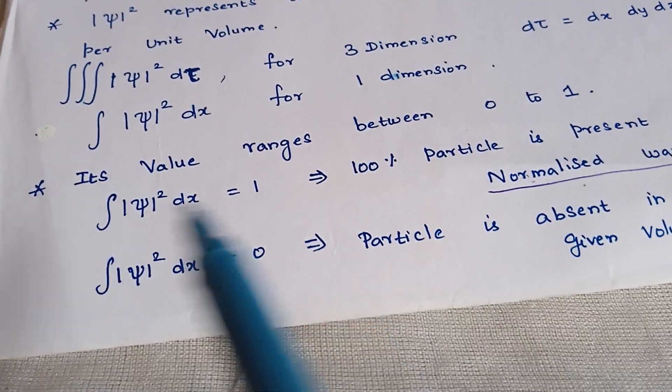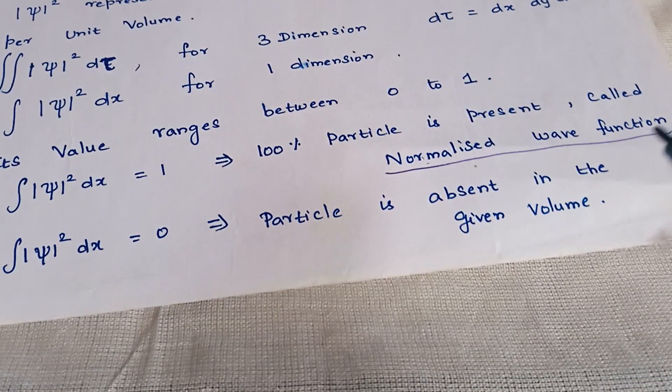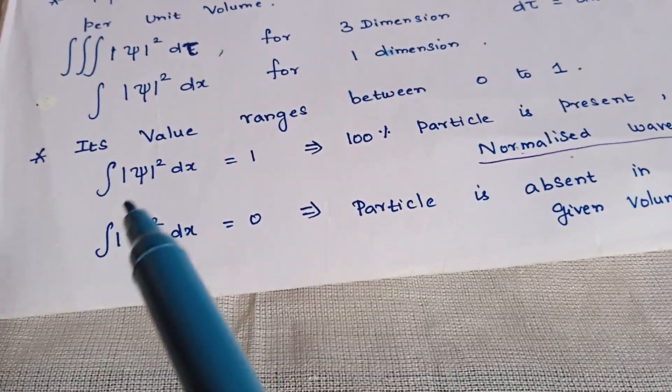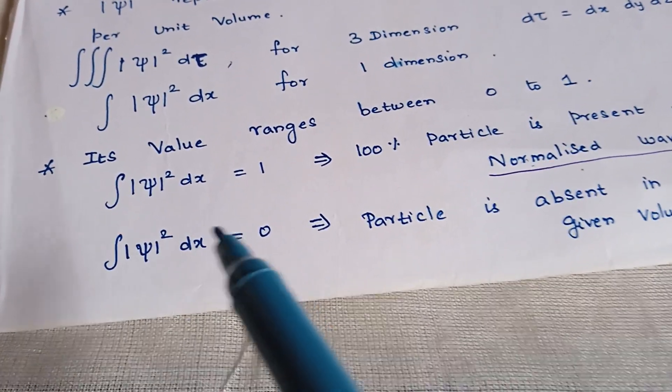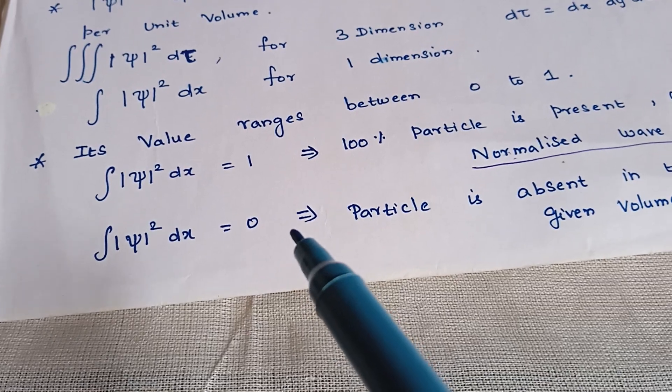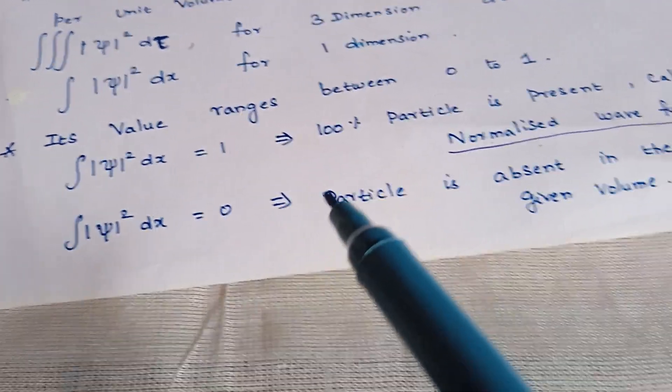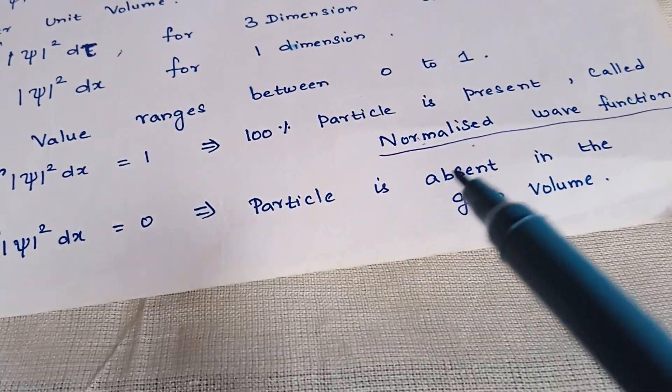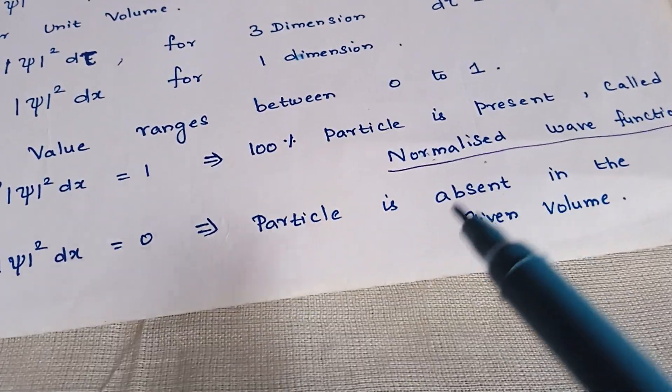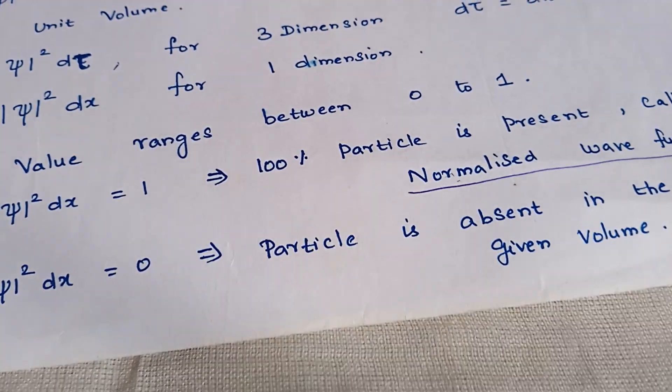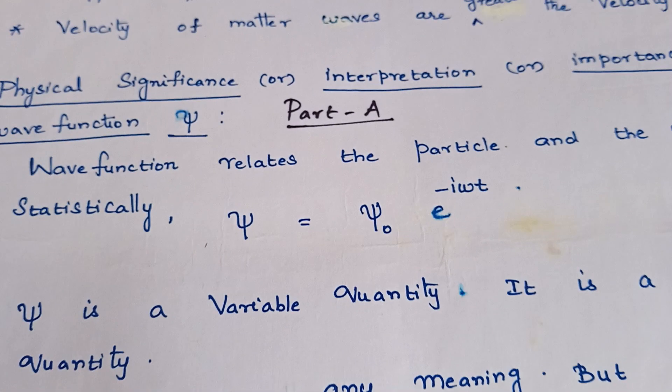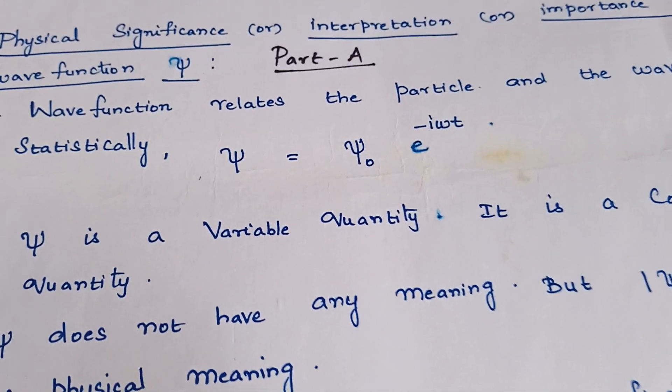This formula is called as normalized wave function. If single integral mod psi square dx is equal to 0 or triple integral mod psi square d tau is equal to 0, it represents the particle is absent in the given volume. These are the physical interpretation or physical significance of wave function psi.